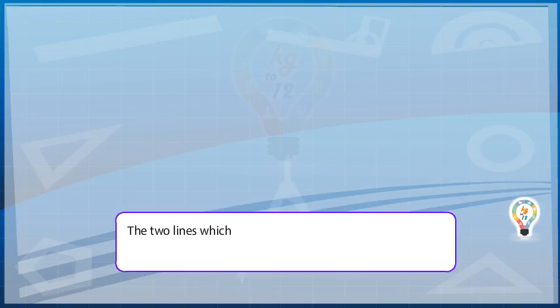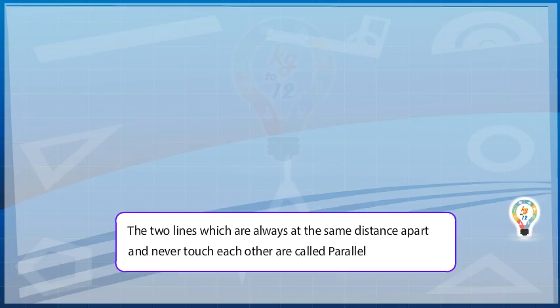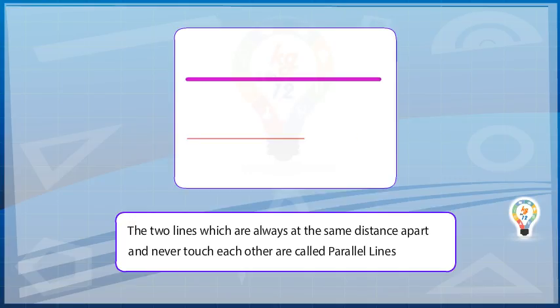The two lines which are always at the same distance apart and never touch each other are called parallel lines. Here the lines are represented in two colors. The purple line is parallel to the pink line.